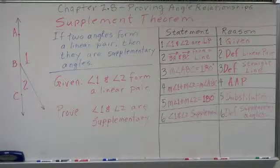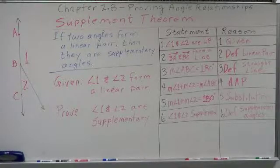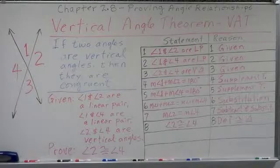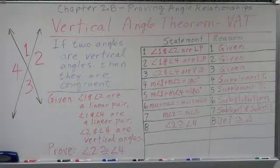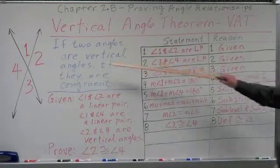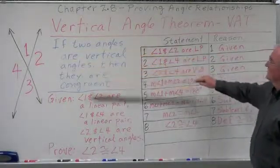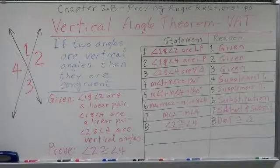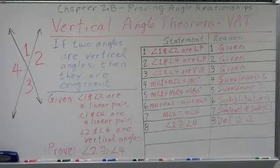We've got some sample theorem proofs for working on proving angle relationships. The next theorem is the Vertical Angle Theorem, or VAT as we will refer to it. We will use it a tremendous amount as we finish out our geometry course. The statement is: if two angles are vertical angles, then they are congruent. They are non-adjacent angles formed by two intersecting lines.